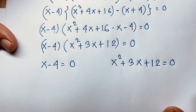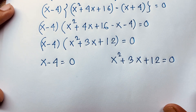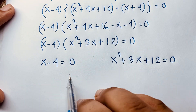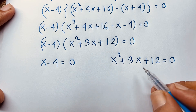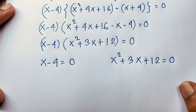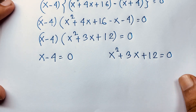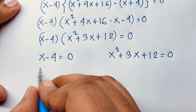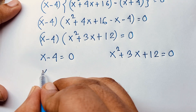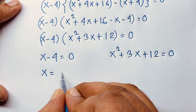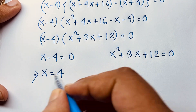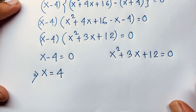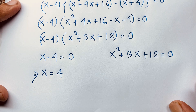So we are finding out two cases here. Our first case: x minus 4 is equal to 0. The other case: x squared plus 3x plus 12 is equal to 0. So here x is equal to 4. This is our real solution in this exponential math problem.